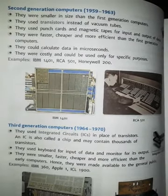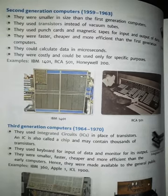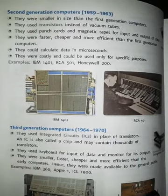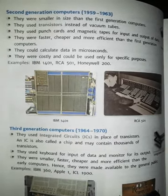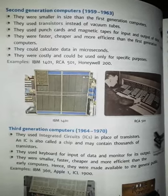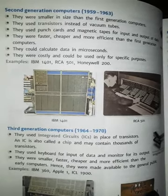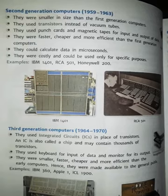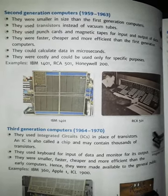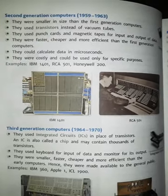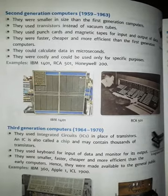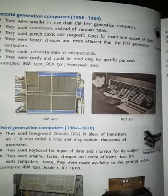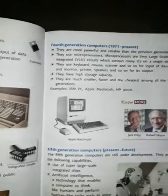We find about the third generation computer, which was developed from 1964 to 1970. This was a remarkable time for computers because in this generation, ICs - Integrated Circuits - were used in the place of transistors. One IC could hold 1000 transistors, which increased the capacity of the computer. They were more smaller than the first and second generation. For the first time, keyboard and mouse were used for input and output. High level language was also used in this generation.